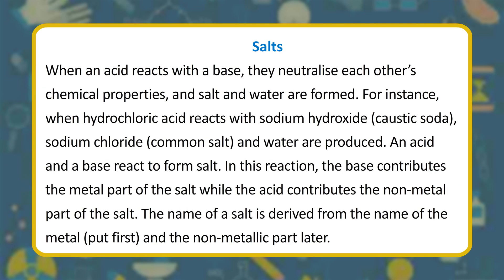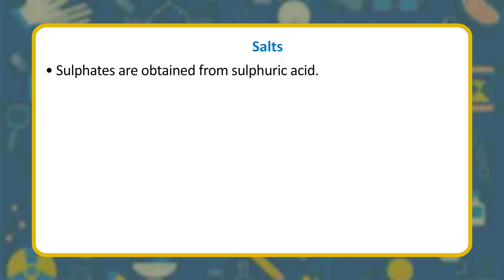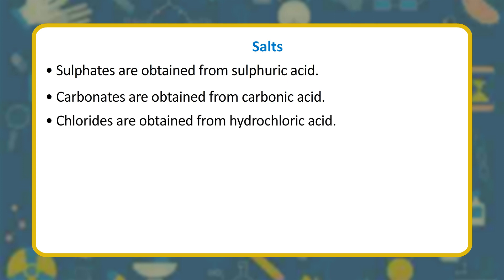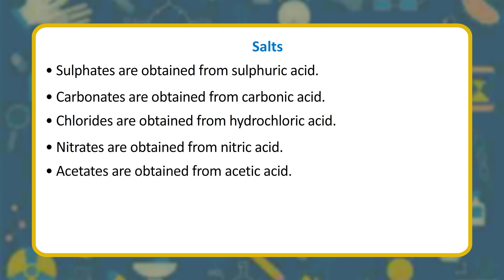Salts: when an acid reacts with a base, they neutralize each other's chemical properties, and salt and water are formed. For instance, when hydrochloric acid reacts with sodium hydroxide (caustic soda), sodium chloride (common salt) and water are produced. The base contributes the metal part of the salt while the acid contributes the non-metal part. Sulfates come from sulfuric acid; carbonates from carbonic acid; chlorides from hydrochloric acid; nitrates from nitric acid; acetates from acetic acid.